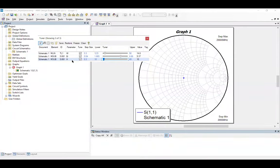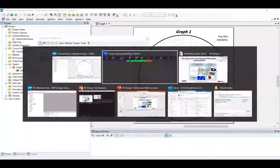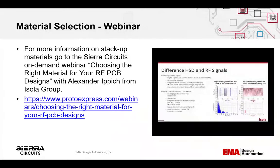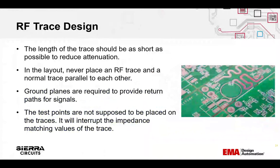The substrate thickness value used is 10. Expanding on the stack-up information, some of the information shown was based on a webinar that CR Networks did a couple of weeks ago — you can go to that for more detail on stack-up materials. For effective RF trace design, aim for the shortest trace lengths to lessen attenuation. Routing RF traces requires special attention to distance between lines; don't run RF and nominal traces parallel to prevent interference.